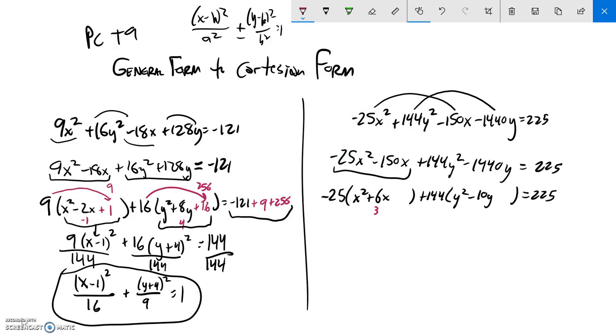Half a 6 is 3. If I square 3, it's a 9. So I'm adding that 9 here. But notice it's multiplied by the negative 25. And that would give me a negative 225. So I'm going to have to balance that out over here.